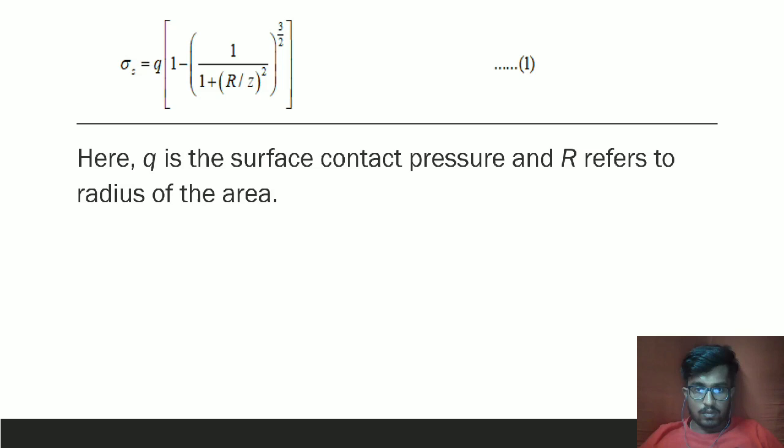Here Q is the surface contact pressure and R refers to the radius of the loaded area.